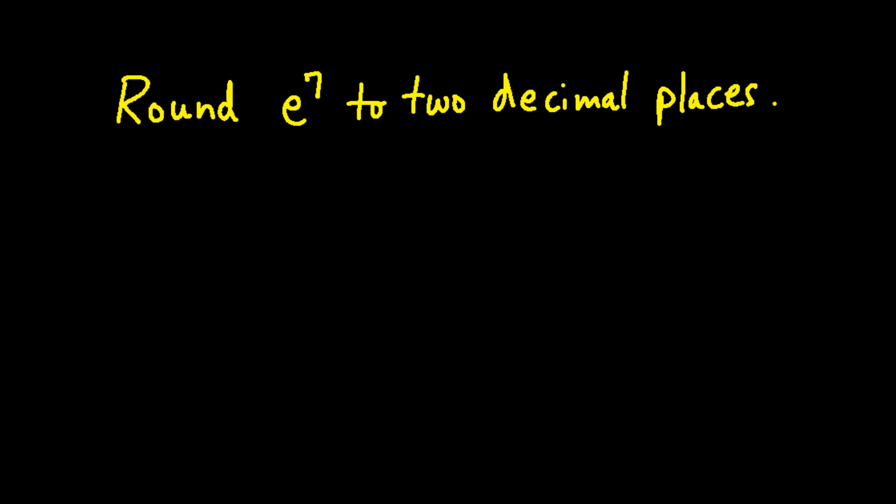This next problem wants us to round e to the seventh to two decimal places. Problems like this involving e are referring to the e to the x button on a calculator. This button is often found by using the second function of the natural logarithm button which looks like ln.